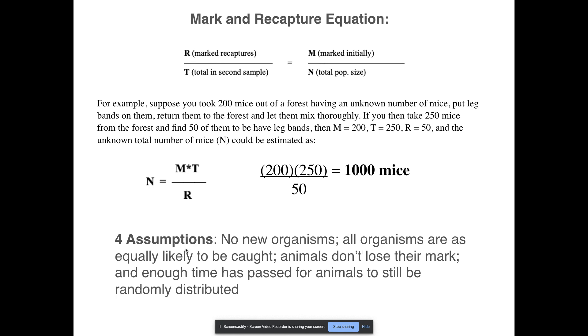Also, the organisms are as equally likely to be caught, meaning that you are not just focusing in one area of this field so that you're only getting a family of mice. Instead, you're going all over the place in this field so that you're able to get a good distribution of mice from different families.